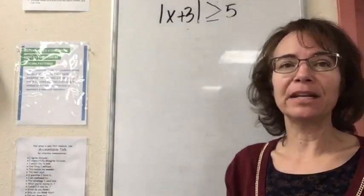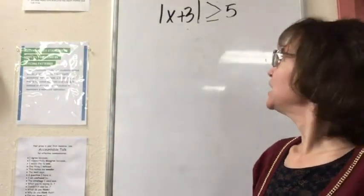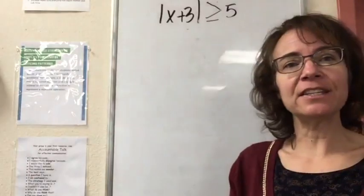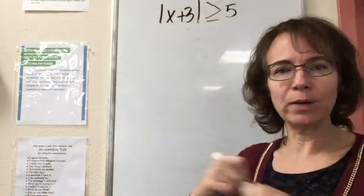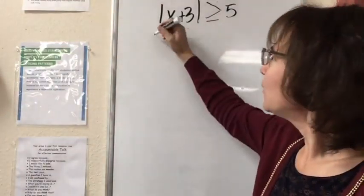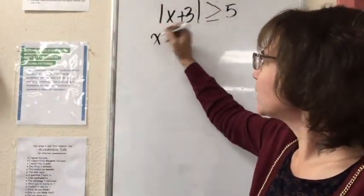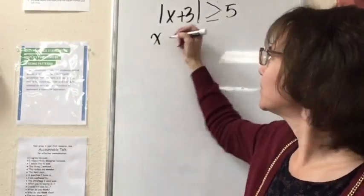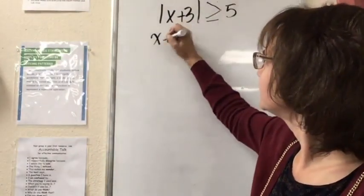Solving an absolute value inequality. We can look at this and solve it the same way we do one-variable inequalities. We can make an equation to help us find our boundary points.